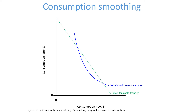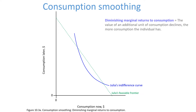An individual's preference is represented by indifference curves. We assume that the more an individual consumes of one good, the smaller the value of an additional unit of consuming that good. So, there is diminishing marginal returns to consumption.